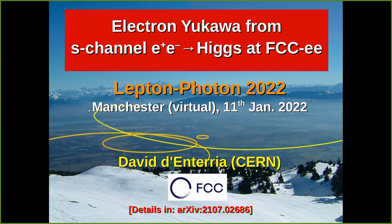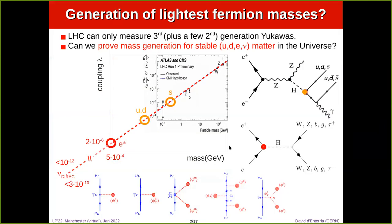We heard in a previous talk what FCC-ee is, so I won't go into these details. If after the meeting you want to check the write-up of this measurement, you can check the arXiv preprint that will appear soon in EPJC+. Let me start with a somewhat provocative statement: the usual lore that the standard model is complete with the discovery of the Higgs boson at the LHC is only true for the mass generation of electroweak bosons and for the third family of fermions, but it is not true clearly for the stable visible matter of the universe — formed by up quarks, down quarks, electrons, and neutrinos.